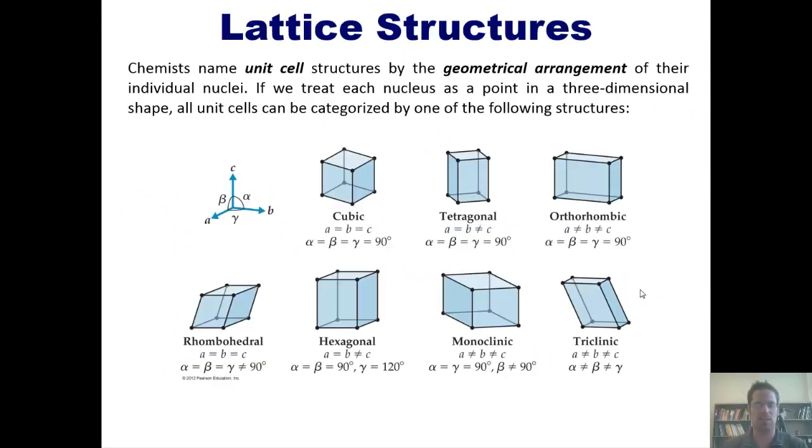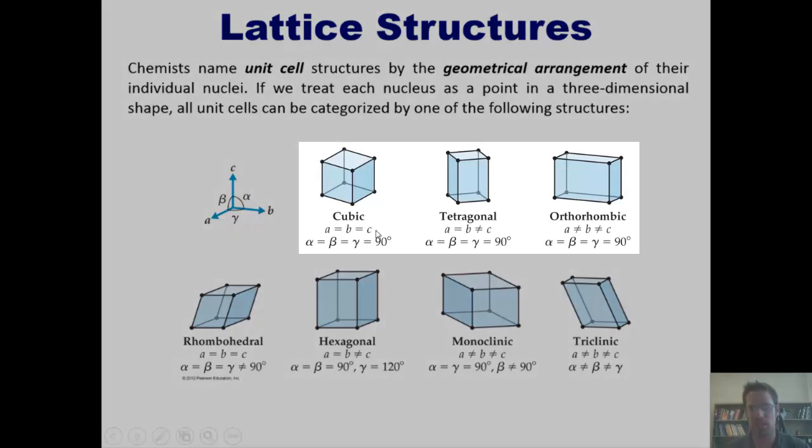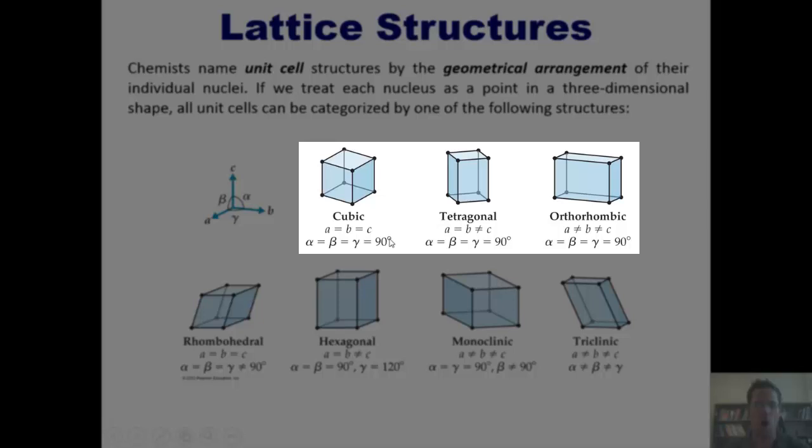As we go back then to all of the unit cells that I described in an earlier slide, let's see if we can find the one that matches that description. All the unit cells shown in this upper group all have 90 degree angles at every single vertex, which does not match what we've seen.